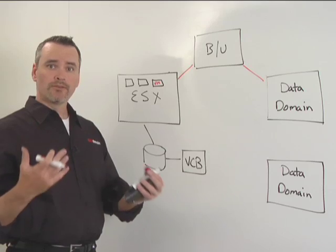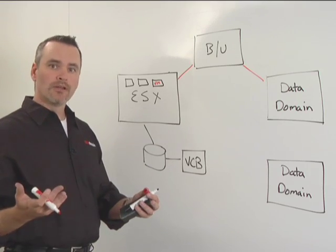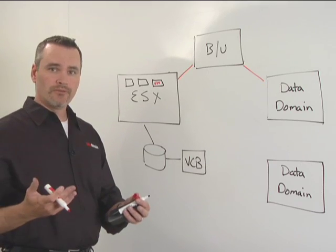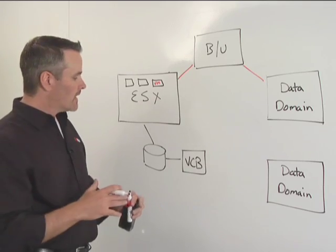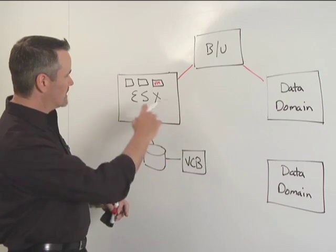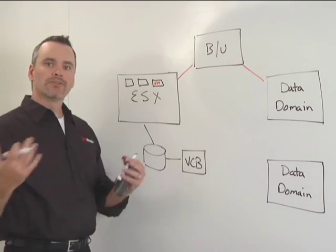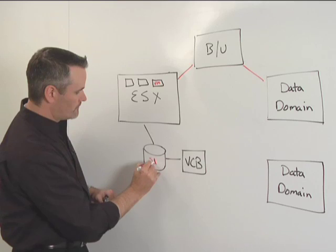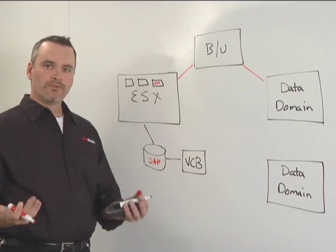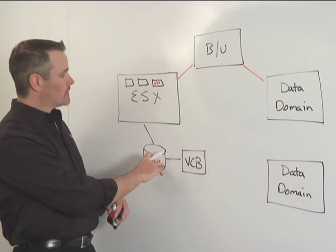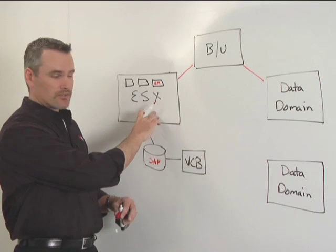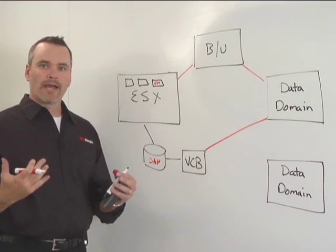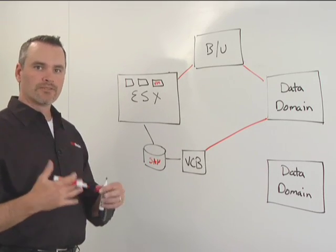That VCB proxy server can be used by traditional backup software like NetBackup or Backup Exec, and it can also be used by specialty VMware products such as VisionCore's VRanger Pro. Whichever route you choose, your backup software initiates the quiescing of your virtual machines. Your VCB proxy then reads those virtual machines without affecting the performance or availability of the ESX server, and your VCB proxy is used to write backup images to Data Domain. That's the second method.